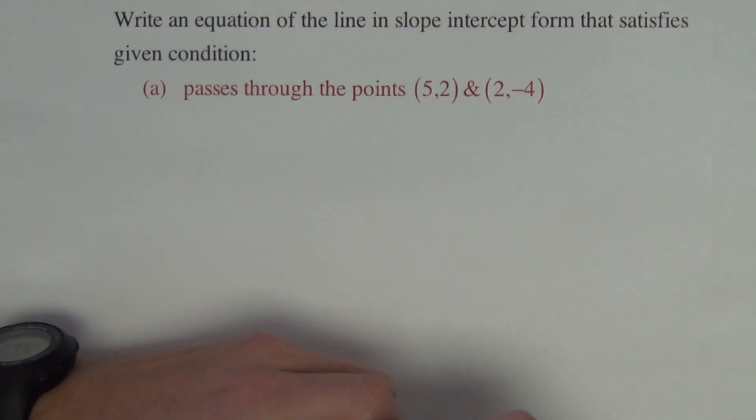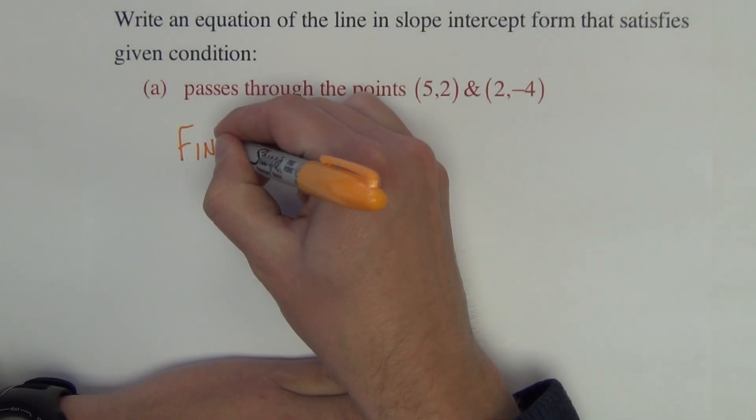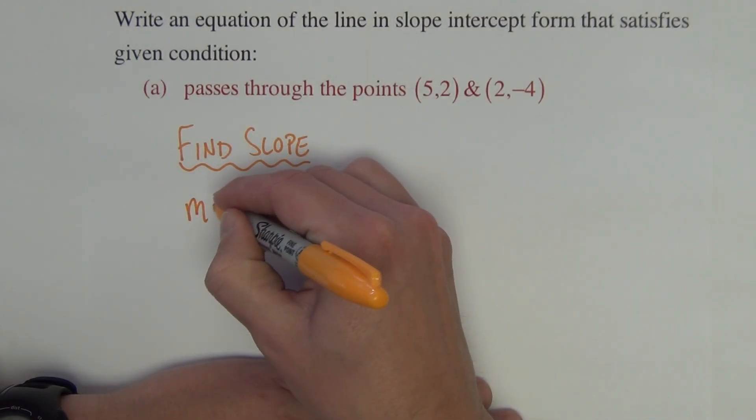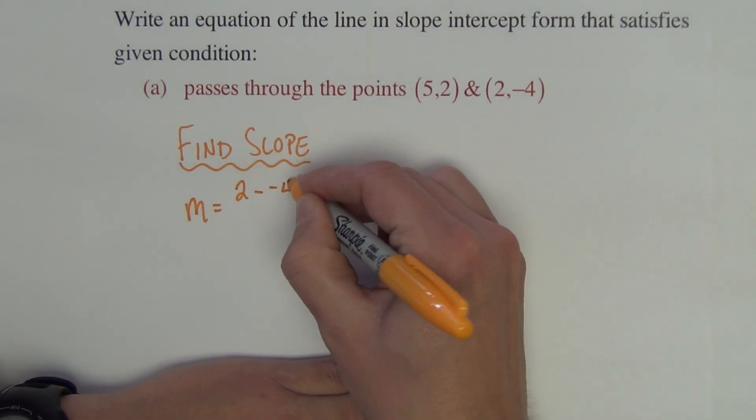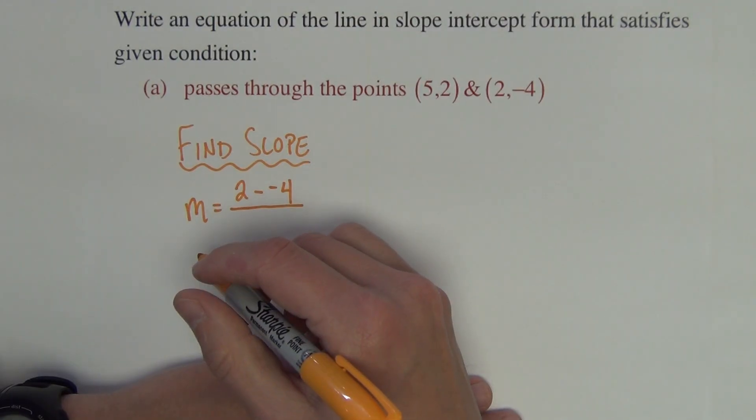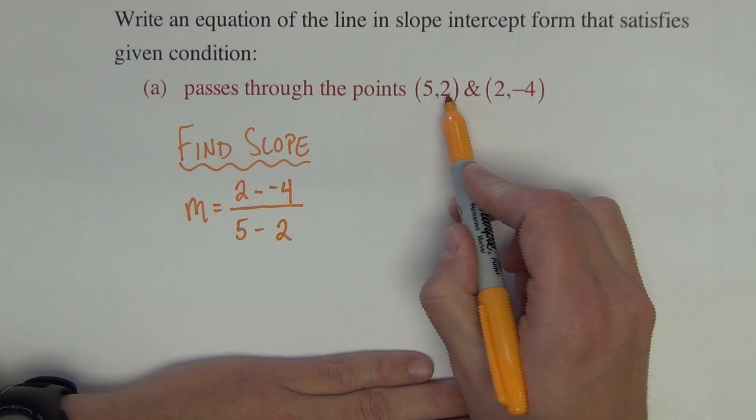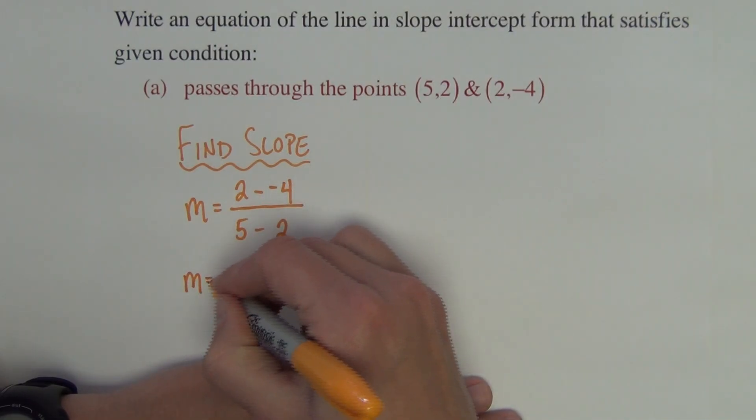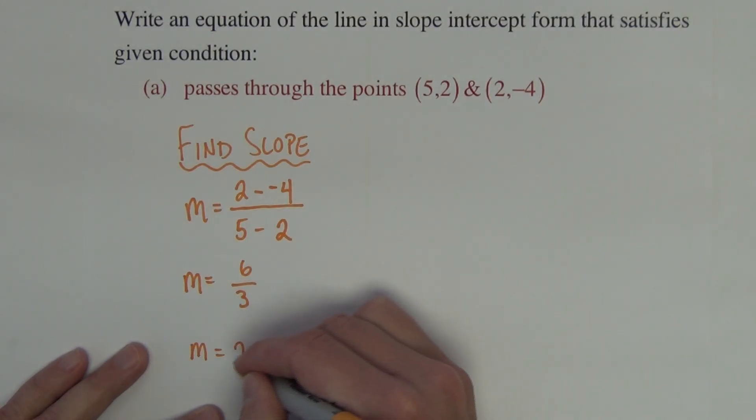First problem: writing the equation of the line in slope-intercept form that passes through the two points (5,2) and (2,-4). The first thing we need to do is find the slope. To find the slope, we do the change in the y values, which could be calculated 2 minus negative 4, divided by the change in the x's, which would be 5 minus 2. So I did y minus y divided by x minus x. That becomes 6 divided by 3, so the slope is 2.